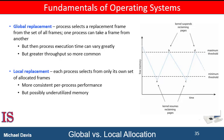Therefore, the same process may perform quite differently — for example, it might take 0.5 seconds for one execution and 4.3 seconds for the next. This is not the case with a local replacement algorithm. Under local replacement, the set of pages in memory for a process is affected by the behavior of only that process. Local replacement might hinder a process, however, by not making less-used pages of memory available to it. So, global replacement generally results in greater system throughput and is therefore the most commonly used method.